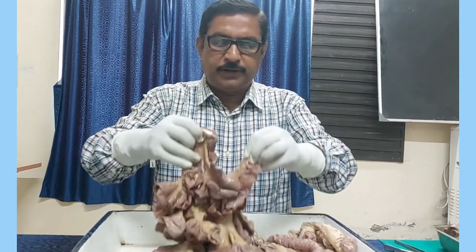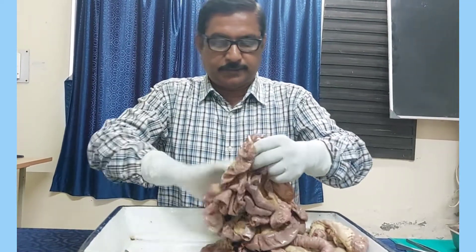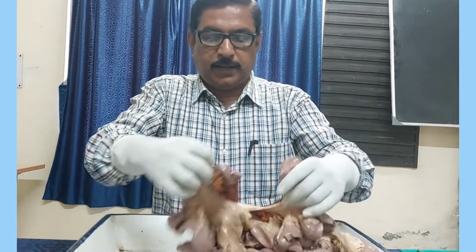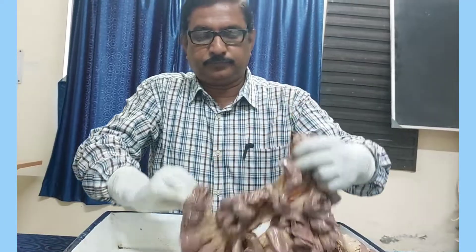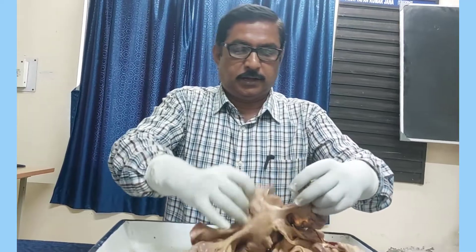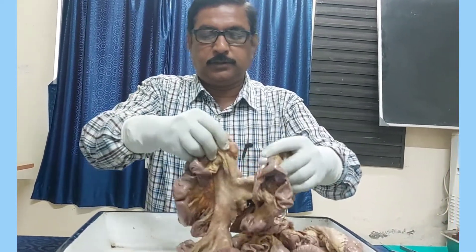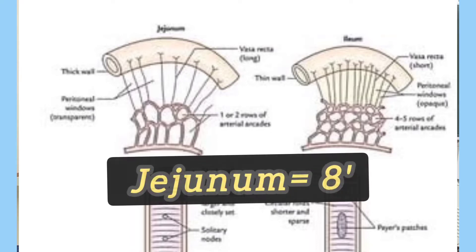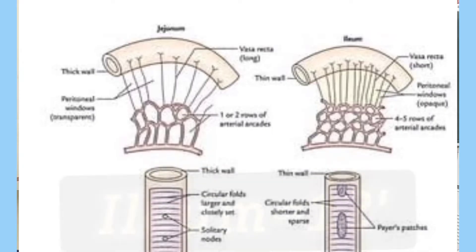Keeping all these features in mind, you have to hold the viscera or specimen of jejunum and ileum in anatomical position. You have identified which is the jejunal side and which is the ileal side. I am holding the jejunal side in one hand and the ileal side in the other. The total length of jejunum and ileum is about 20 feet, of which the jejunal part is about two-fifths — 8 feet — and the ileal part is about three-fifths, that is 12 feet.